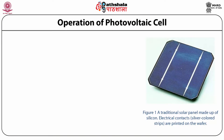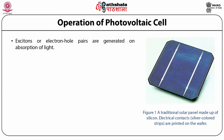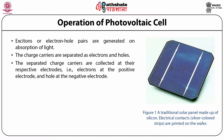A photovoltaic cell operates on the following three attributes. First, excitons or electron-hole pairs are generated upon absorption of light. The charge carriers are separated as electrons and holes. Then the separated charge carriers are collected at their respective electrodes — electrons move towards the positive electrode and holes move towards the negative electrode.